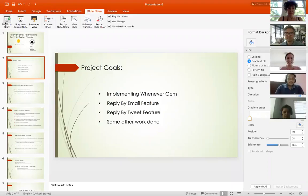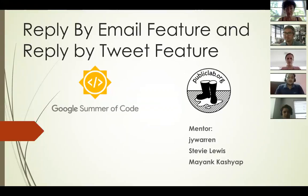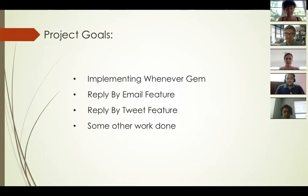My project was the reply by image feature and reply by tweet feature. The first thing I did was include the Whenever gem, which is used by our tweet feature for polling tweets every one or two minutes. It is also used for email digesting — sending mail weekly or biweekly. My project goals were implementing the Whenever gem, the reply by email feature, and the reply by tweet feature. I also did some other related issues just for fun.